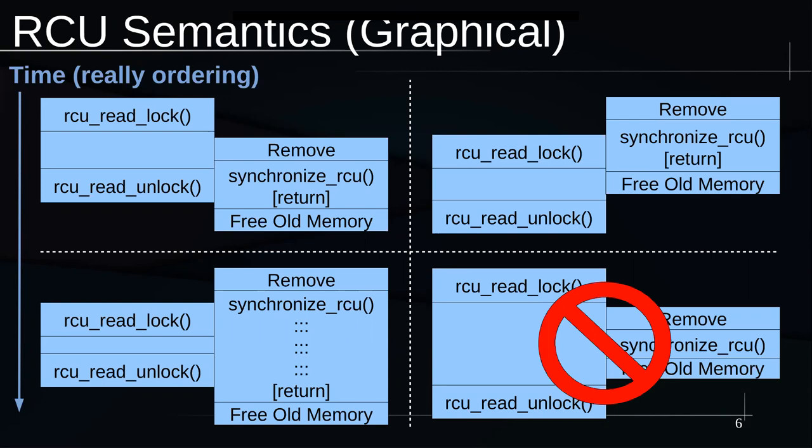We can have both belt and suspenders — that's the lower left. If we have a reader that showed up after the removal, it can't see the data being freed. That's doubly good because it didn't see the memory and it wasn't freed until it was done anyway. The bad case — the bug in RCU case — is the lower right-hand side: we cannot have a reader that starts before a synchronize_rcu starts and ends afterwards, because it could get a reference to that old data and might still be using it when it's freed.